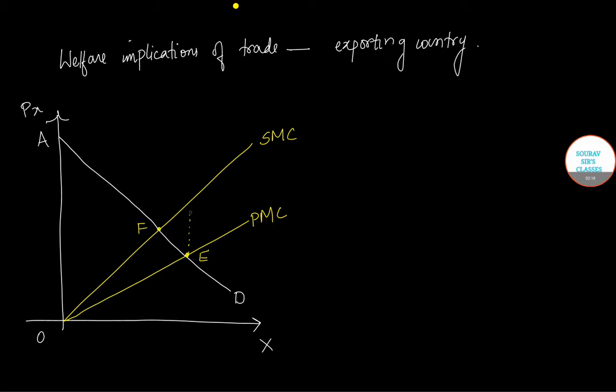Extend this line and touch the social marginal cost curve at H. Now I'll also consider, so instead of marking this I'll mark this as E dash, the point of intersection. From the point E I'm drawing a vertically straight line touching the PX axis, marking the point as B.